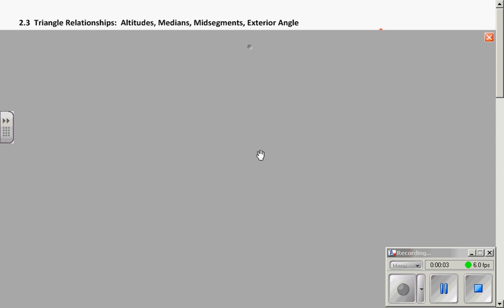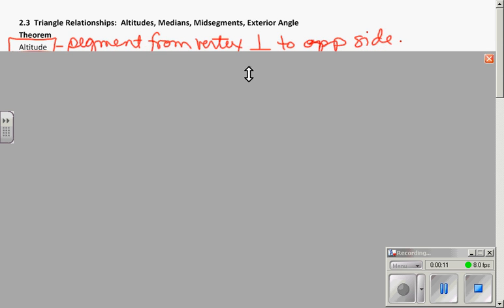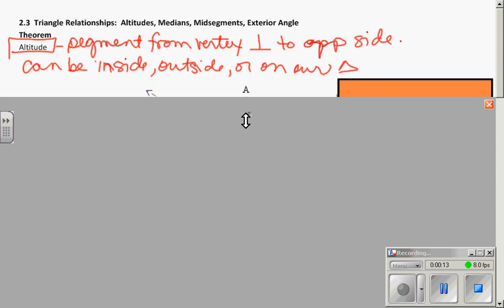Okay, we start the 2-3 lesson, and we're going to start talking about triangle relationships and special lines and angles that happen in triangles. Our first is the altitude, and an altitude is a segment from the vertex perpendicular to the opposite side of a triangle. It can be inside the triangle, outside the triangle, or on our triangle.